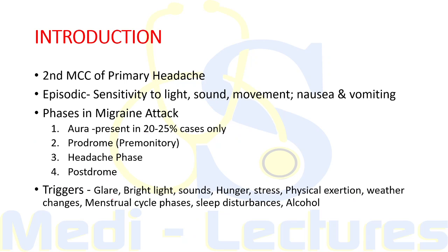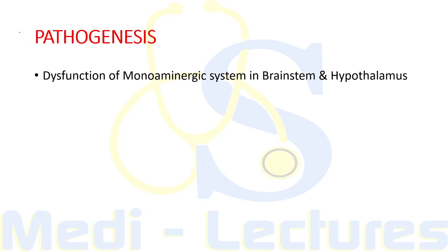Migraine is often activated by triggers such as glare, bright light, sounds, hunger, stress, physical exertion, weather changes, menstrual cycle phases, sleep disturbances, and alcohol. It is very important to note that migraine sufferers are particularly sensitive to environmental and sensory stimuli. This sensory sensitivity is particularly due to dysfunction of the monoaminergic system in the brainstem and hypothalamus.